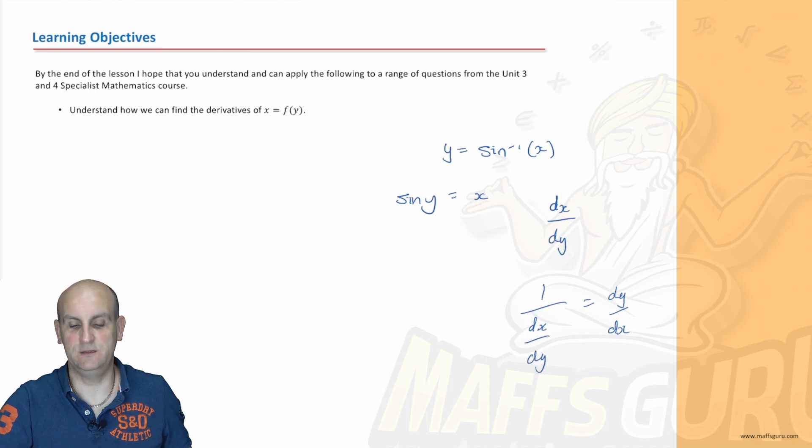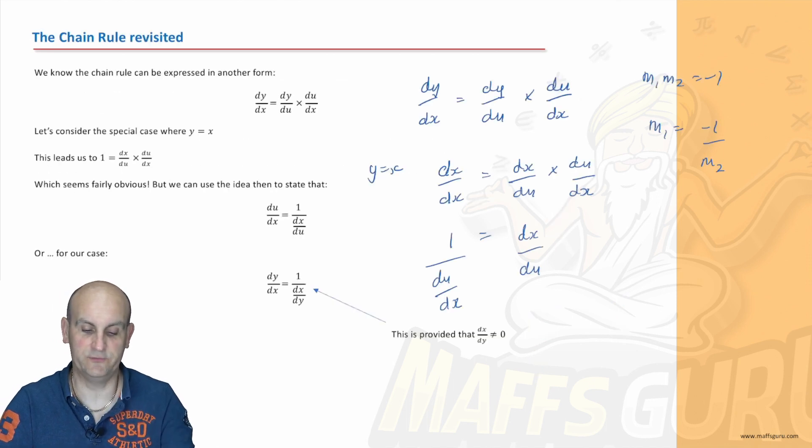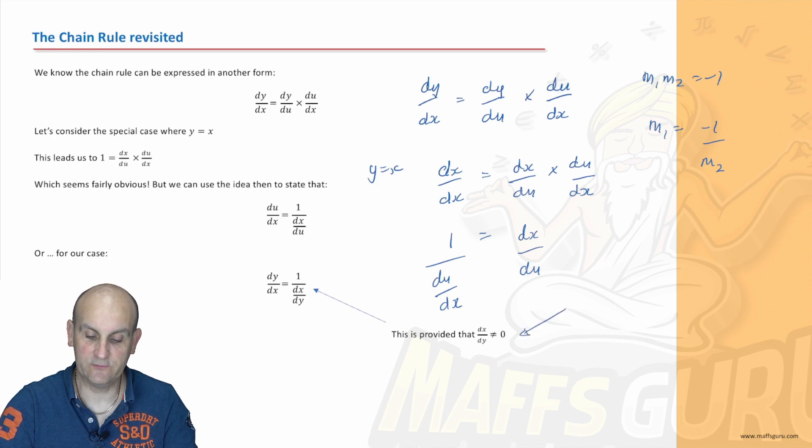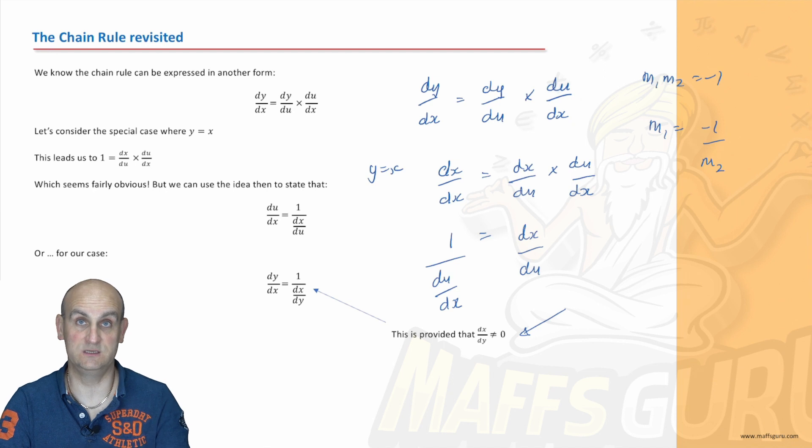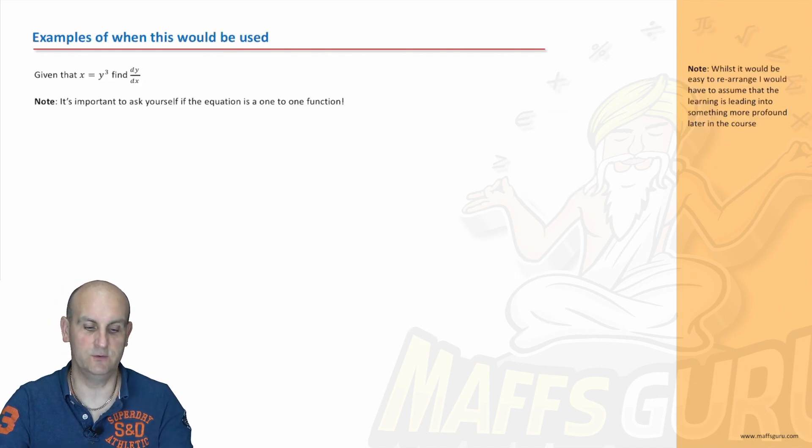Now you're going to turn around and say, well, where is this going to be useful? And I will show you some examples in a moment. But basically this is only true, as I say here, so long as that dy by dx, or sorry, dx by dy does not equal zero. Okay. So that's important and you'd have to make sure that dy by dx or dx by dy is not equal to zero or it's not going to work.